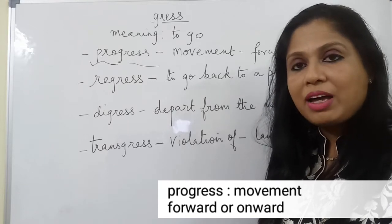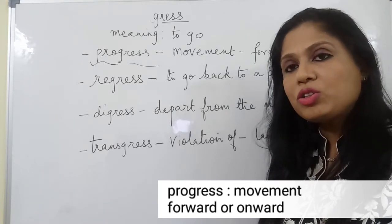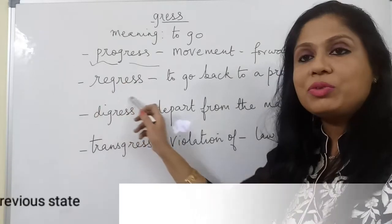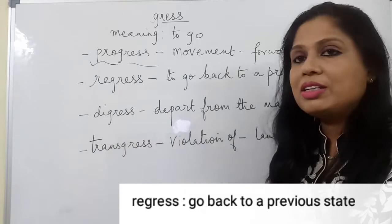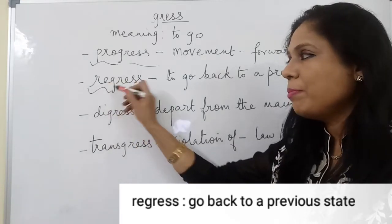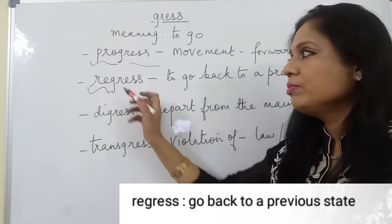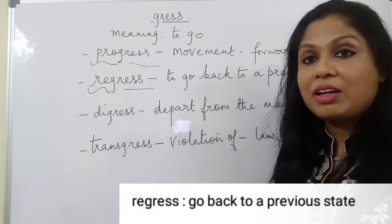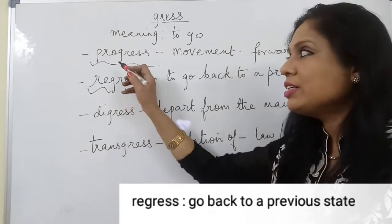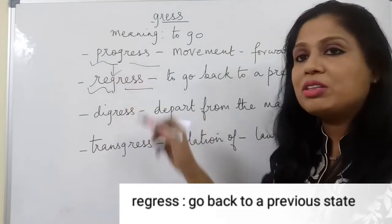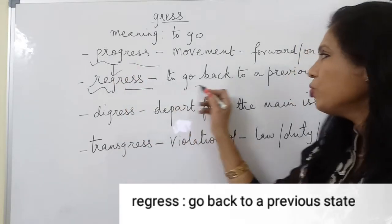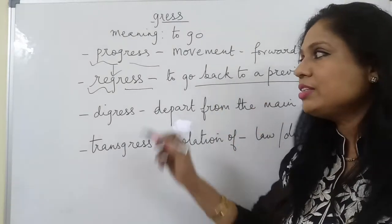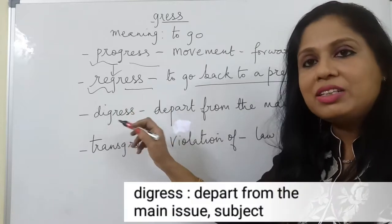For example, man has made a lot of progress. The next word is 'regress'. 'Re' is a prefix which means back or backwards. So, to go back or to move back is the meaning of the word regress. It is an antonym of the word progress. To go back to a previous state is also applied here.